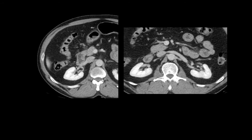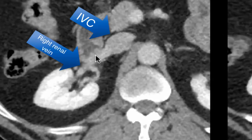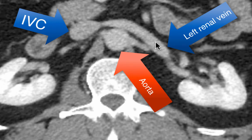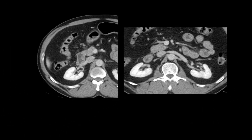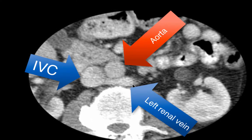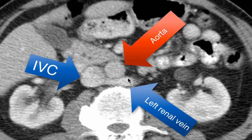The renal veins drain into the inferior vena cava. The right renal vein is shorter as it drains directly into the IVC. The left renal vein is longer and travels over the anterior aspect of the abdominal aorta. However, there can be variations in renal vein anatomy, typically on the left side, including a retroaortic renal vein that passes posterior to the abdominal aorta, or a circumaortic renal vein in which branches pass both anterior and posterior to the abdominal aorta.